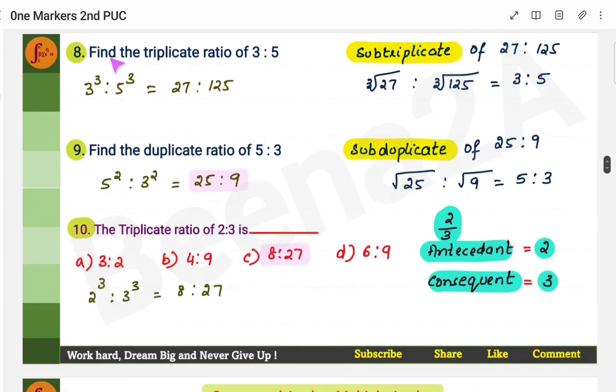Now very important, find the triplicate ratio. Triplicate ratio means find the cube, cube, that is to the power 3. That is triplicate ratio, to the power 3. So 3 is to 5 means 3 cube. 3 into 3 into 3, which is 27. 5 into 5 into 5, which is 125.